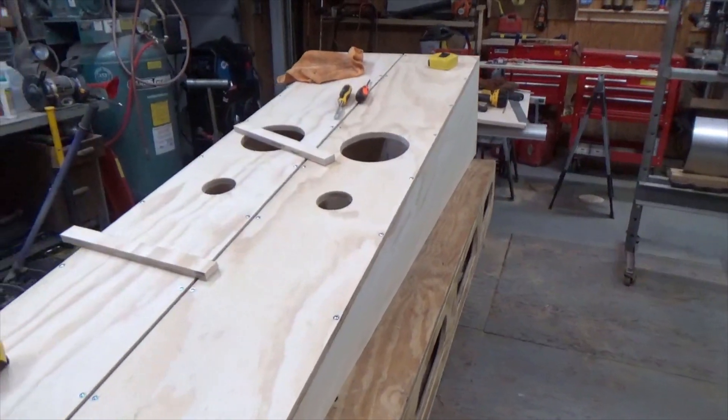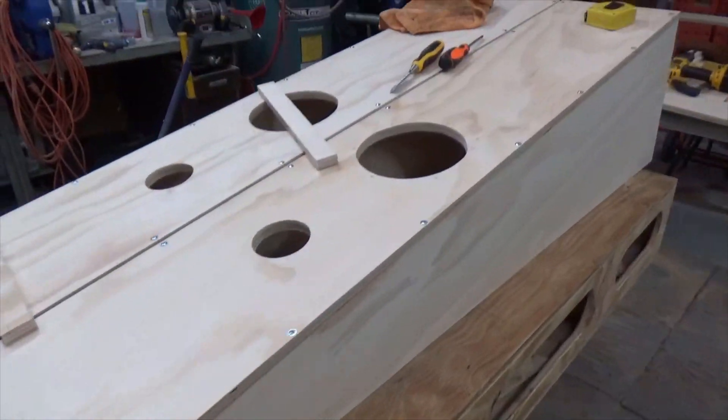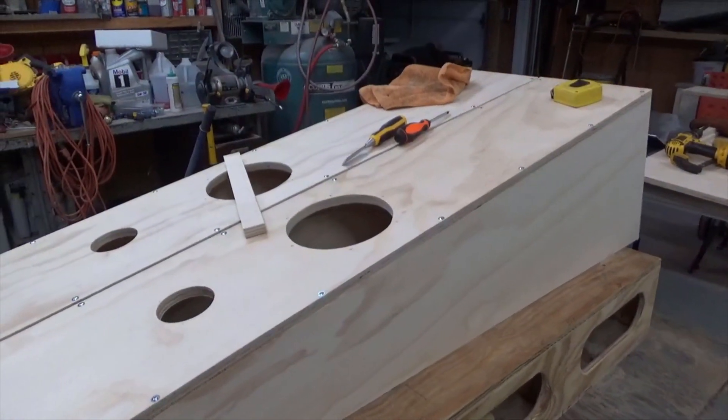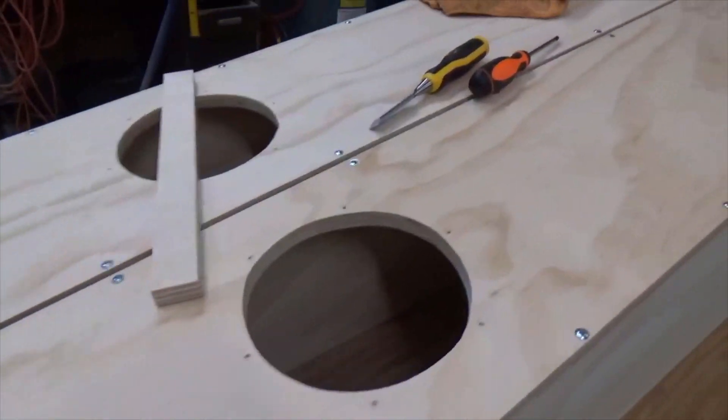I wasn't super excited with how the Ohm Walsh 2000 knockoffs came out, so instead I decided to make some Voigt tubes. Everything's pretty simple with making them so far.